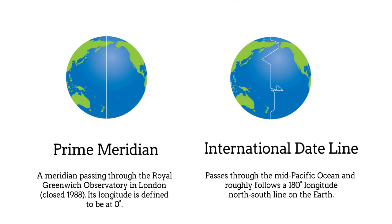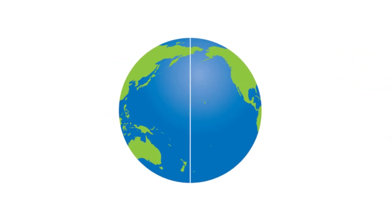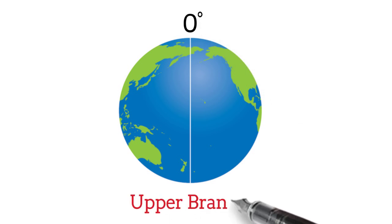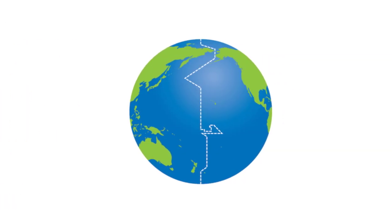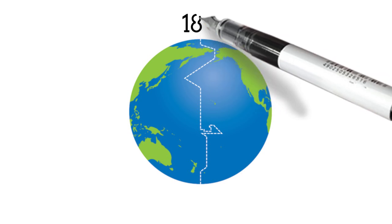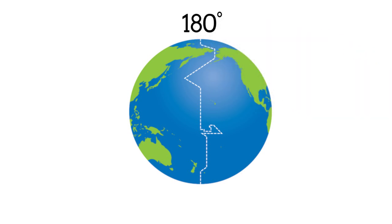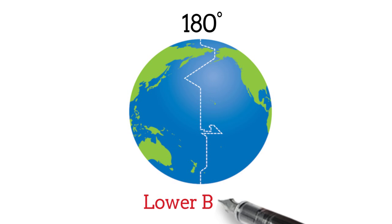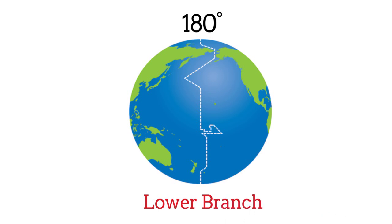Prime Meridian at zero degrees is the upper branch because, according to the definition, it is the half from pole to pole which passes through a given point. The International Dateline at 180 degrees is the lower branch, for the reason that the lower branch is defined as the opposite half.